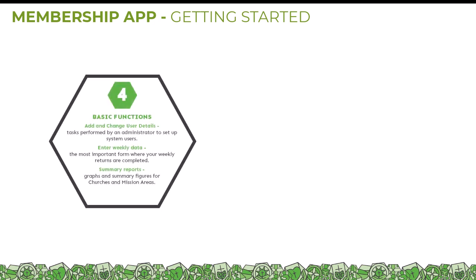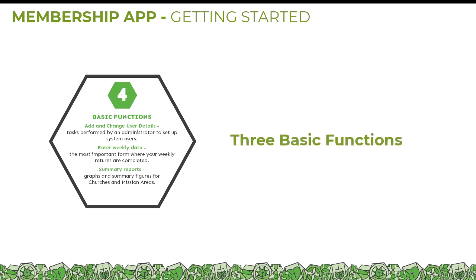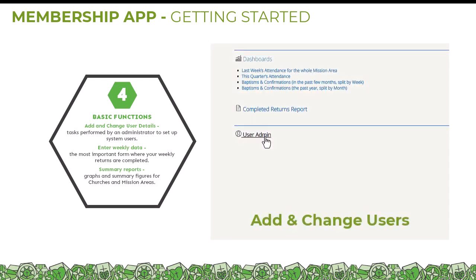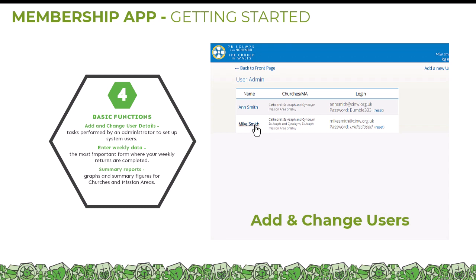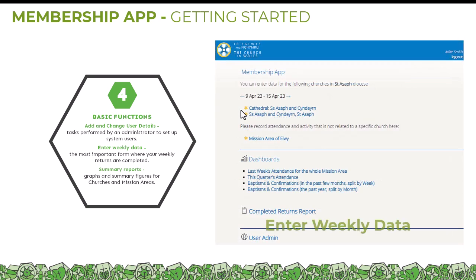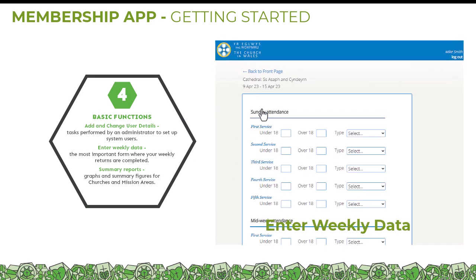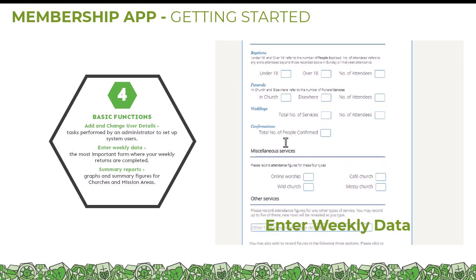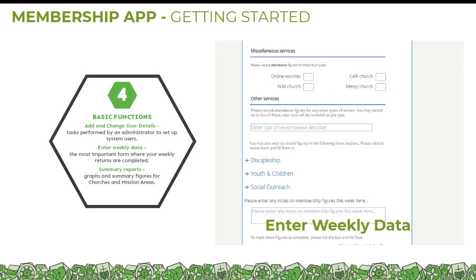The membership app is pretty straightforward to use. There are three basic functions. One: adding and changing user details — only administrators can perform this. Two: entering weekly data — this is the area that most people will use, filling in congregation data for each church each week.